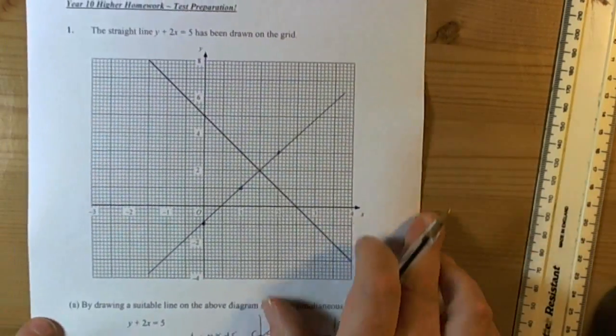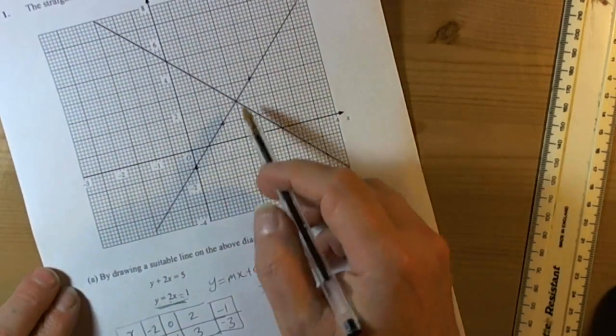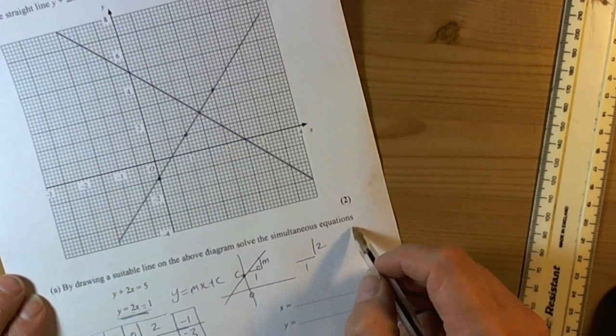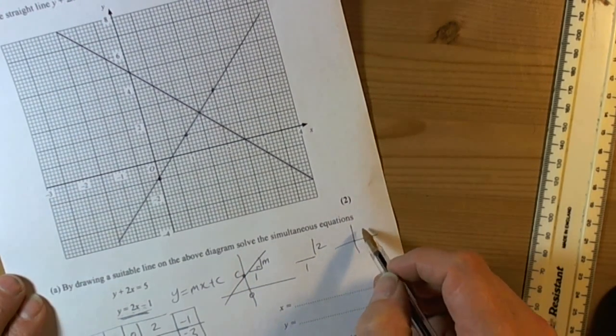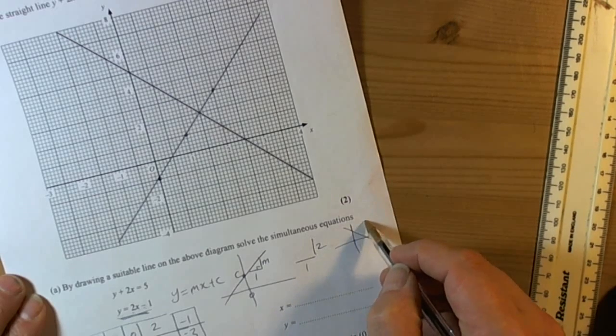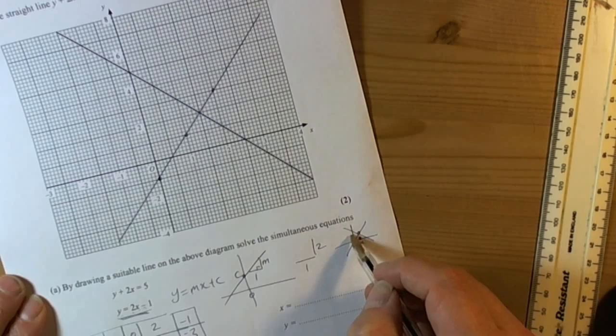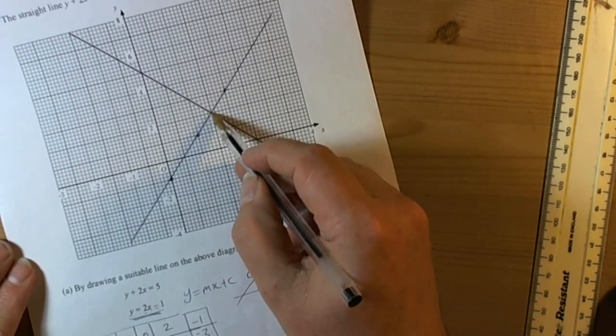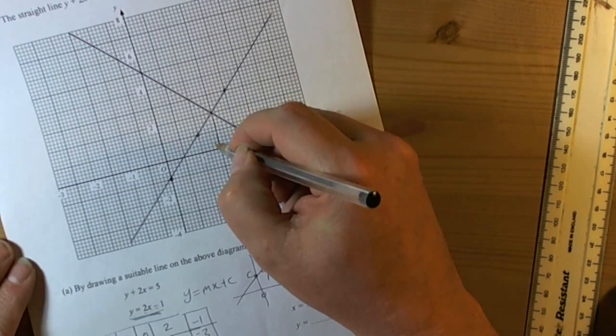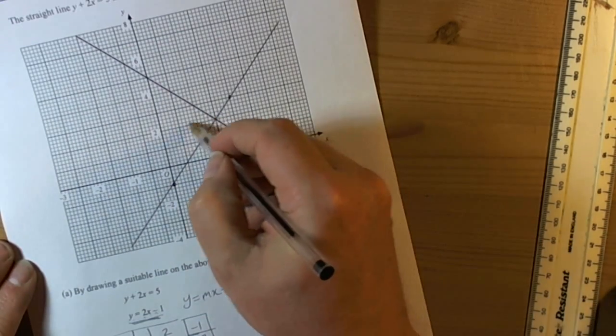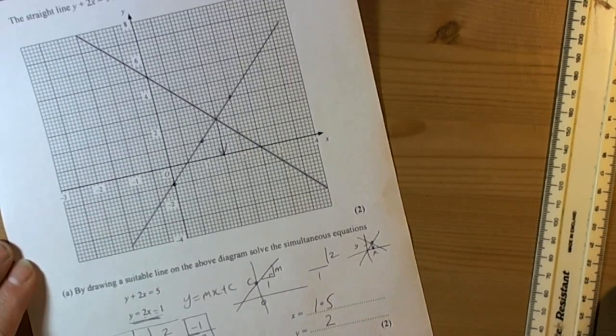Now because this question is about simultaneous equations and it's asking for the solution, the solution of simultaneous equations on a graph will be where the two graphs cross. That will be the solution—read off the x number and then read off the y number. So here we can see that the x number is 1.5 and the y number is 2.